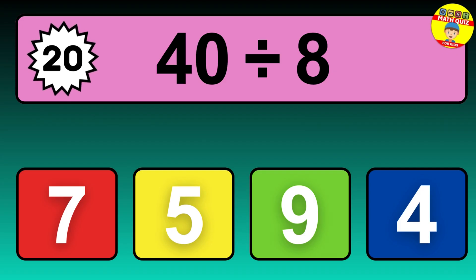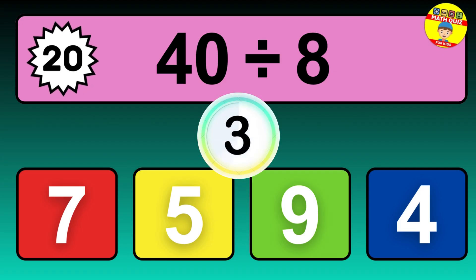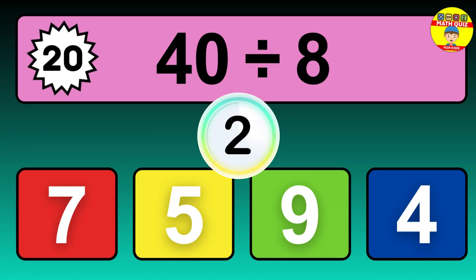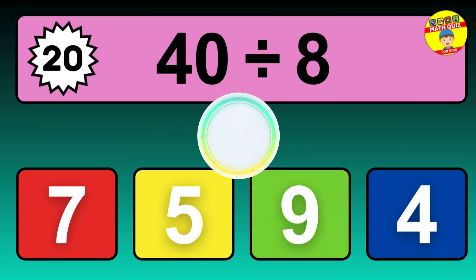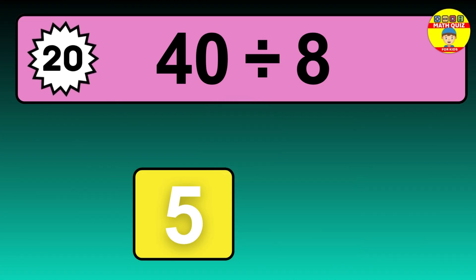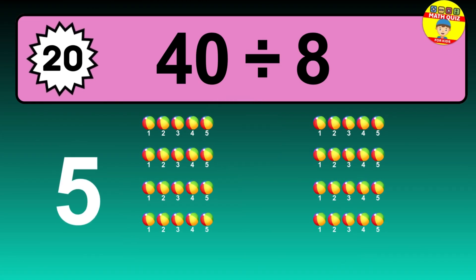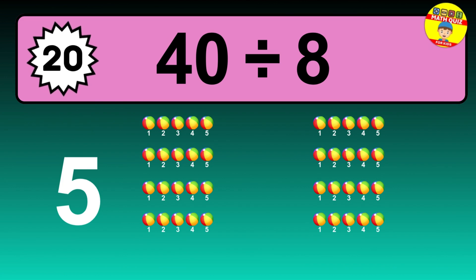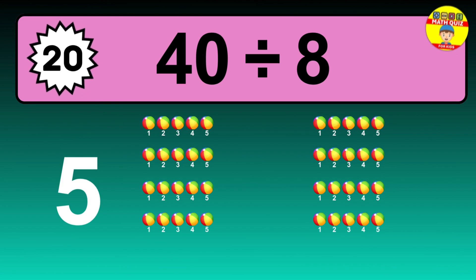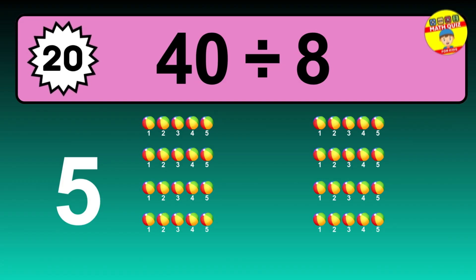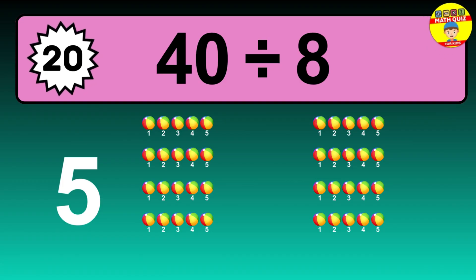40 divided by 8. It's time to think. Divide the number 40 by 8. Each group contains 8 units, so dividing 40 by 8 results in 5 equal groups. Thus, 40 divided by 8 equals 5.